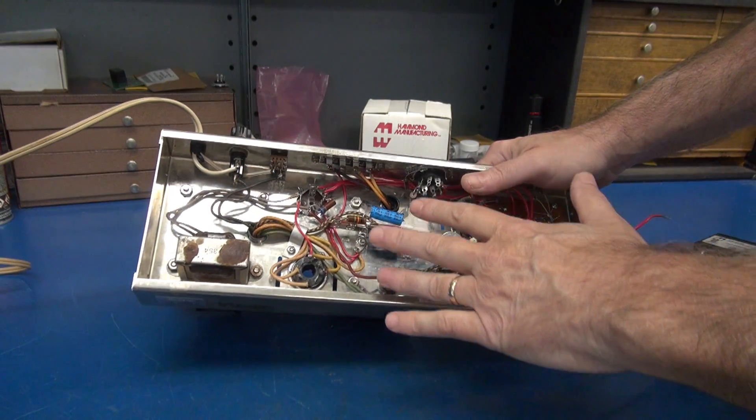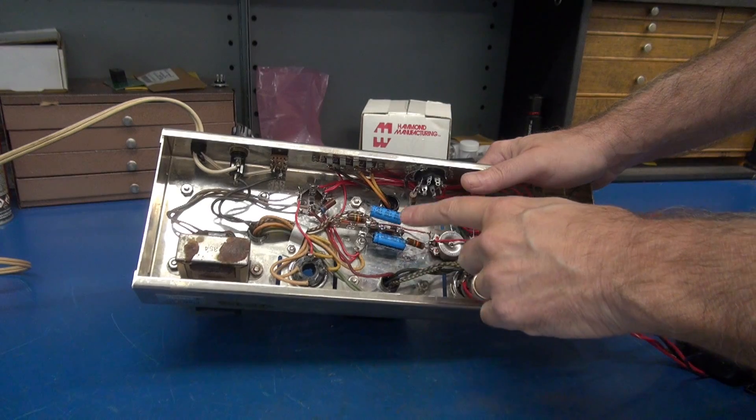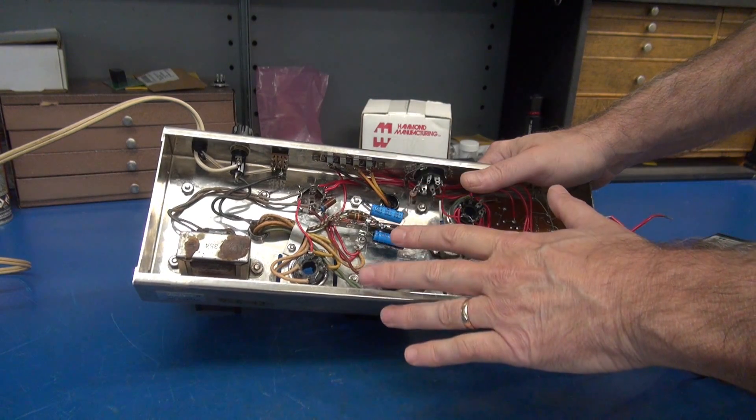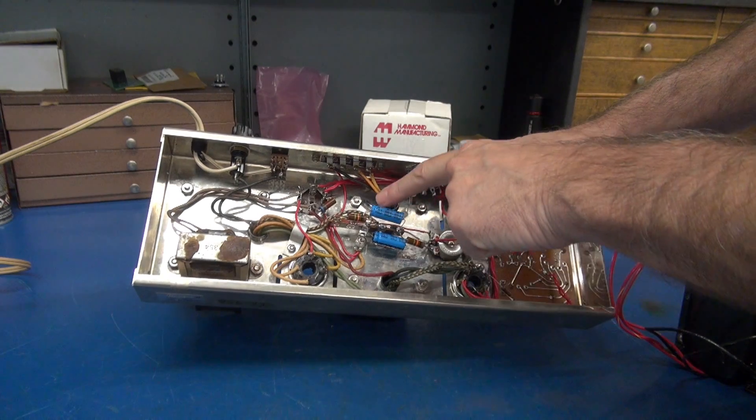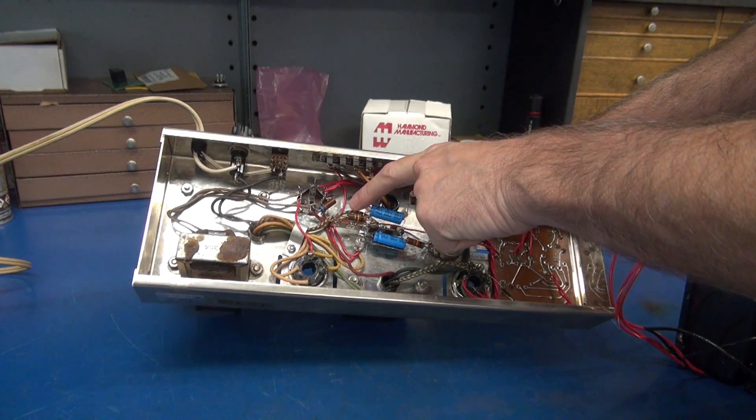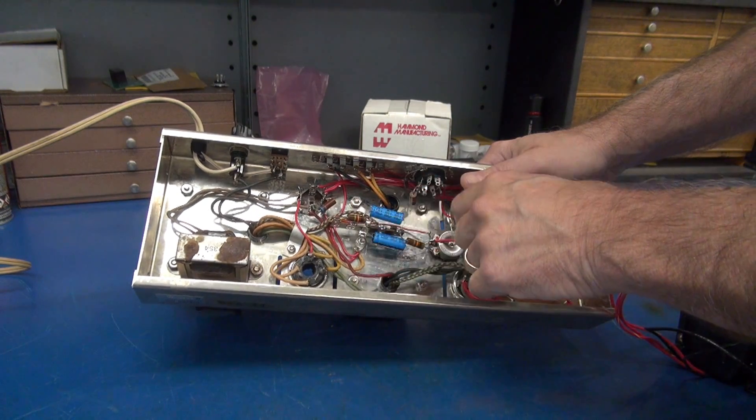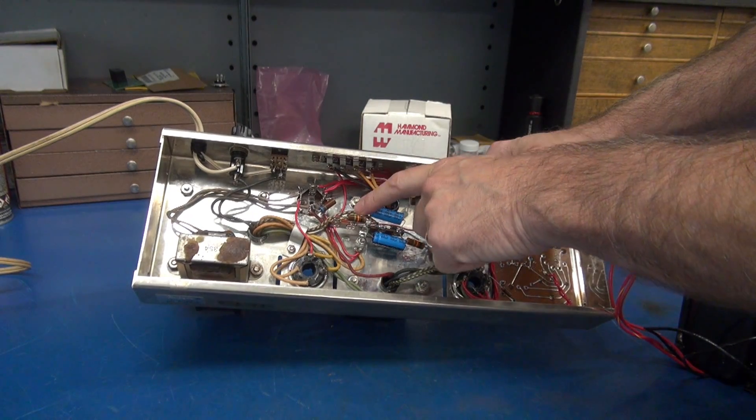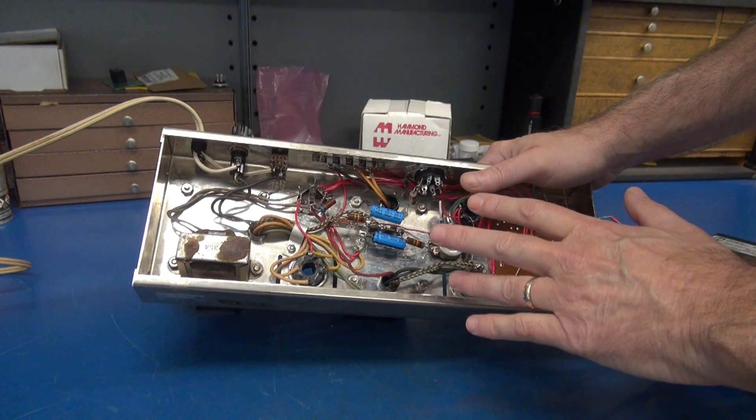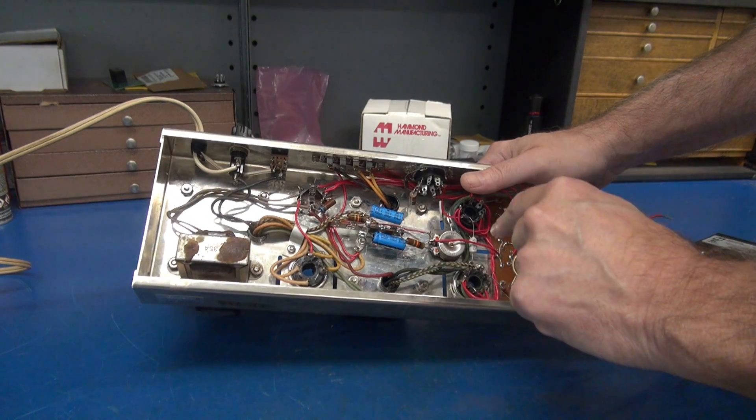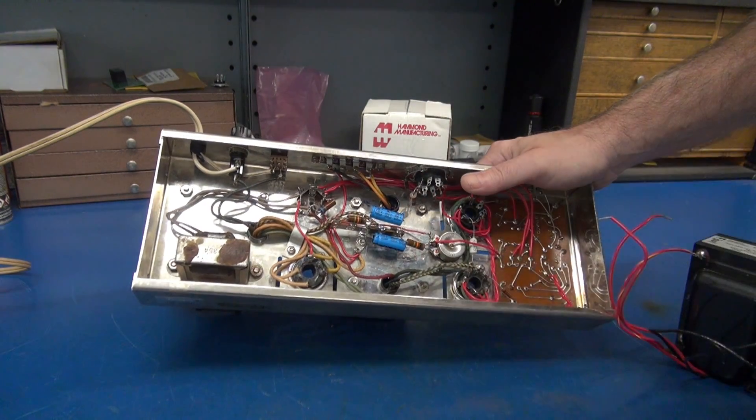First step I need to unwire the old original transformer. I'm going to document how it was routed. The difference though between the new Hammond and the original is we're not going to have the set of bias windings. This is around a negative 55 volt system. They had a dedicated winding for that. On the Hammond we're going to tap off the high voltage system with a step down resistor for the bias just like Fender does on their amplifiers.